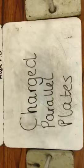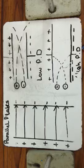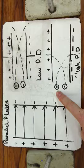Charged parallel plates. These are examples of parallel plates, and these are electrons in a low potential difference and these are electrons in a high potential difference. They're not electrons. What are they? Protons.